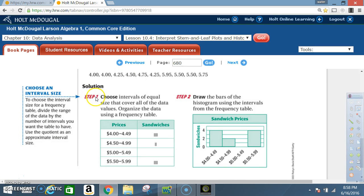Solution. Step one: choose intervals of equal size that cover all of the data values. Organize the data using a frequency table. So first we're gonna make a frequency table. After we choose our intervals, the intervals used here are $4 to $4.49, $4.50 through $4.99, $5 to $5.49, and then $5.50 through $5.99. Now how many sandwiches fall within this price range? You get four. How many fall within this price range? Two. Within the $5 to $5.49 price range? Zero. And between $5.50 and $5.99 you ended up with four.